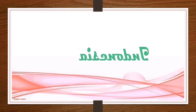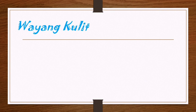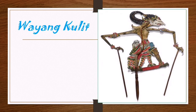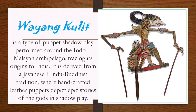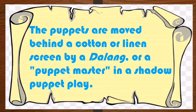Next is Indonesia. Indonesia has their Wayang Kulit. Wayang Kulit is a type of puppet shadow play performed around the Indo-Malayan archipelago, tracing its origin to India. It is derived from a Javanese Hindu-Buddhist tradition where handcrafted leather puppets depict epic stories of gods in shadow play. The puppets are moved behind a cotton or linen screen by a dalang, who is the puppet master in a shadow puppet play.